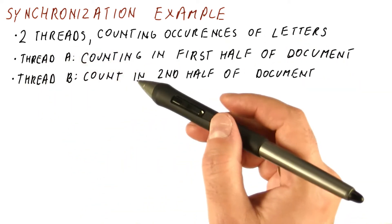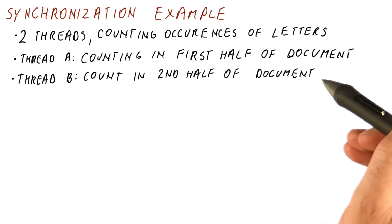And the second thread, let's call that thread B, is counting in the second half of the document, and then they will put these counts together somehow.